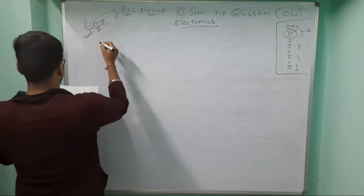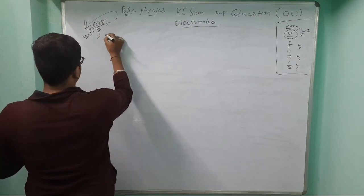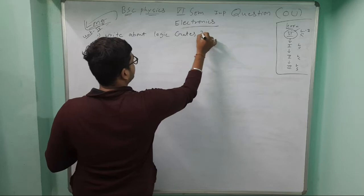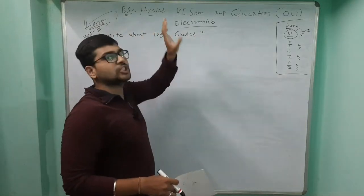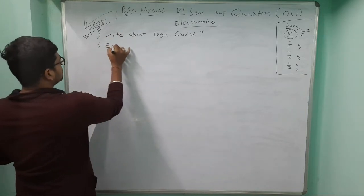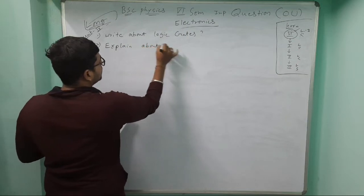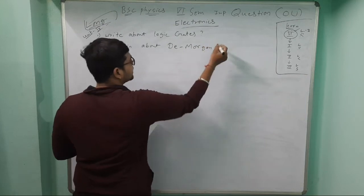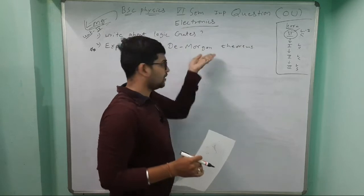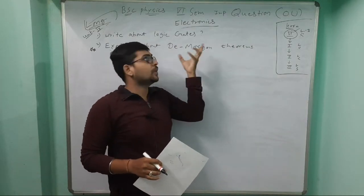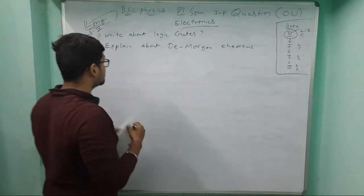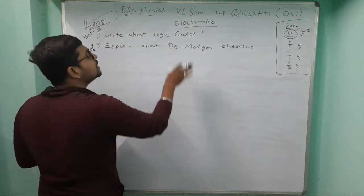For Unit 4, remember first you study your unit four. First question: write about logic gates. You have to write logic gate diagram and truth table - compulsory to write. Next question: explain about De Morgan's theorem. In this, there are two theorems. You have to write the truth table and prove using logic gates that left-hand side equals right-hand side. This is very important - I'm giving three stars.